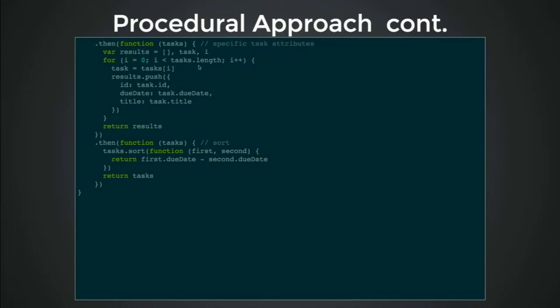Same thing when we want to get specific attributes — we don't want the whole task, just specific chunks. Here's the for loop, here's the boilerplate again — we get that task and push a new object matching those keys: id to task id, due date to task due date, etc. Finally return the results. And the last thing is sorting: task.sort using the array built-in, with due date minus second due date as the comparator so it sorts ascending by date.